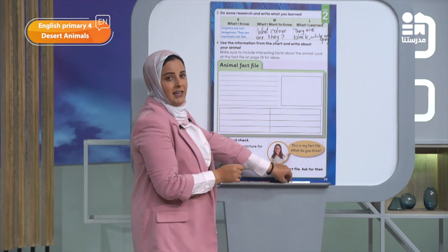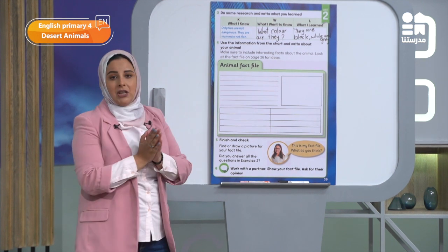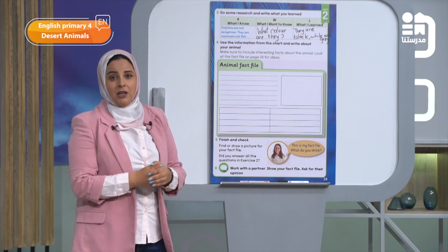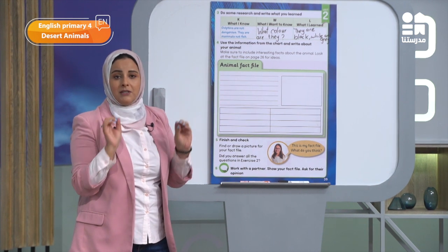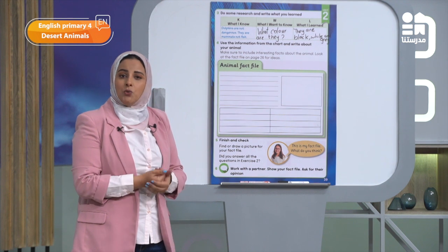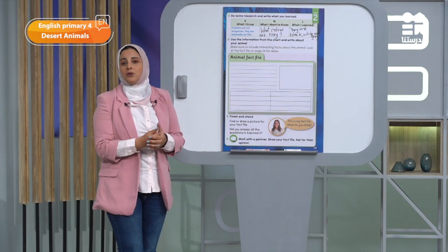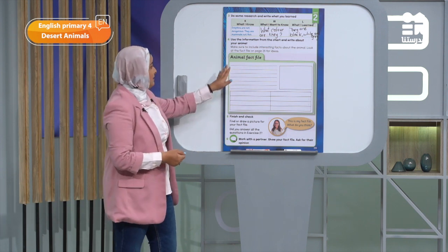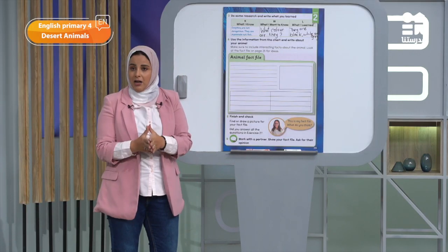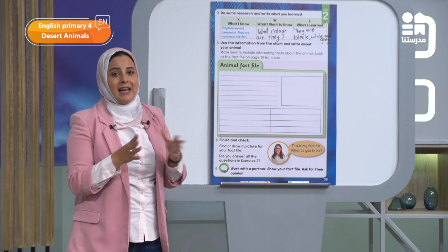Now let's go to exercise number four. Use the information from the chart and write about your animal. You are going to write your animal's fact file. Look at the fact file on page 26 to help you — we talked about the fennec fox there. We can go back to the fennec fox and see how we wrote the animal fact file. We'll do the same here, just like we talked about the rim gazelle and the fennec fox and previously the pelican and the polar bear. You can write about any animal you choose.